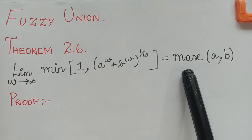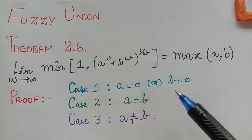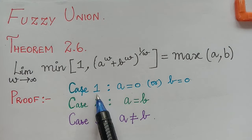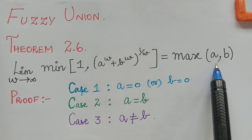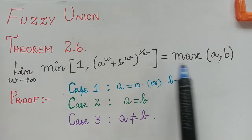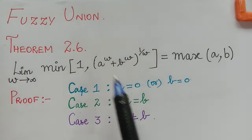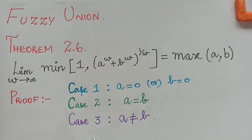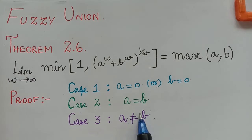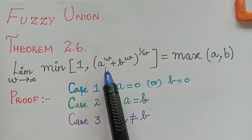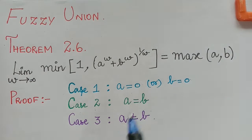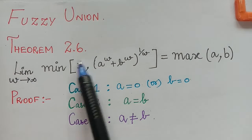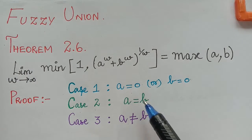The proof will be done in three cases. In case 1, we will consider a equal to 0 and b equal to 0 and check whether the theorem is satisfied. In case 2, we will consider a equal to b. In case 3, a is not equal to b, which has two subcases: subcase 1 where the minimum value is (a^w + b^w)^(1/w), and subcase 2 where the minimum value is 1.